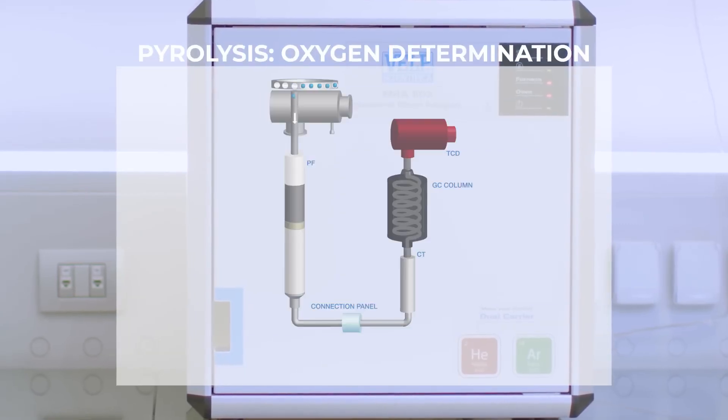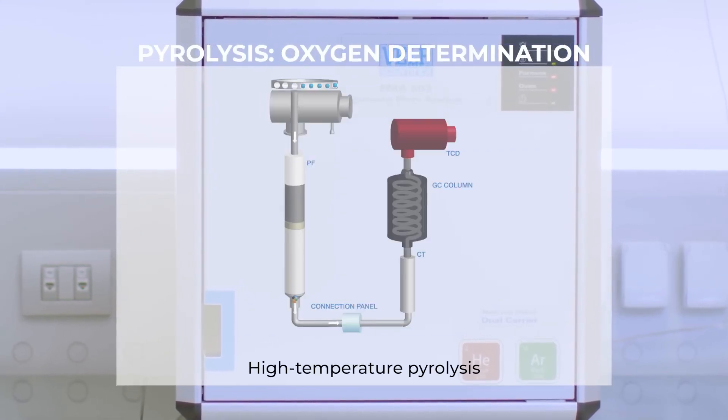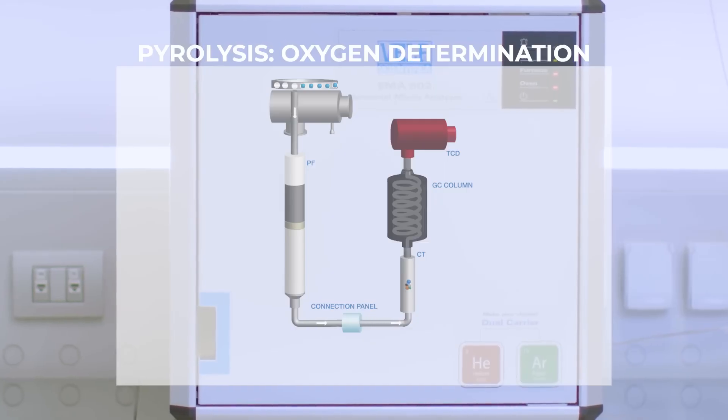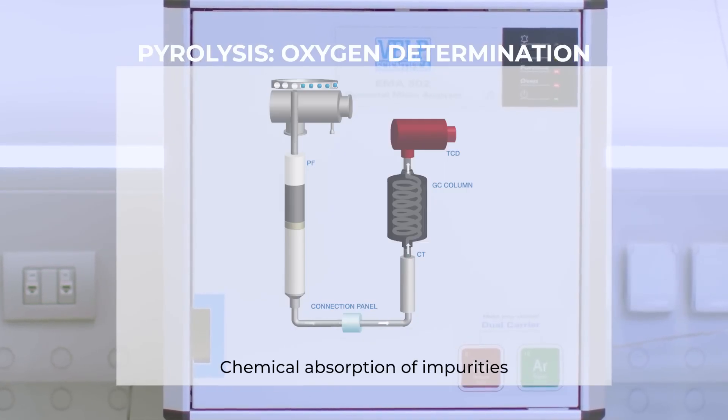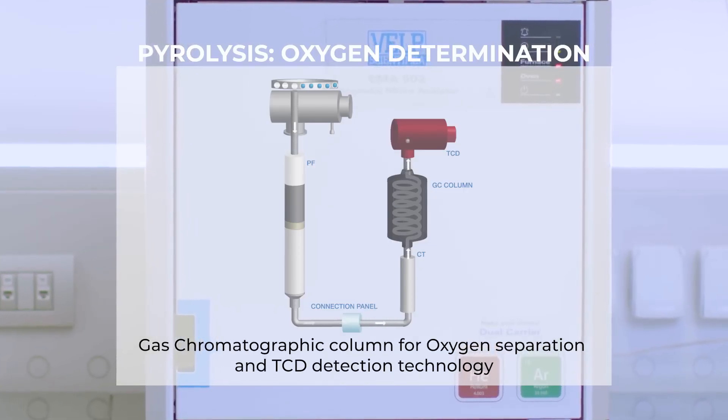The sample is purged with the carrier and drops into the reactor where high temperature pyrolysis takes place. The flow then passes through a chemical trap to absorb all impurities before being conveyed to the gas chromatographic column and the TCD for oxygen quantification.